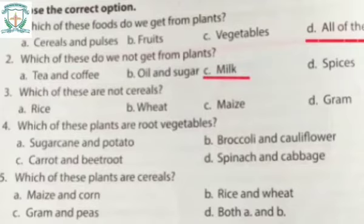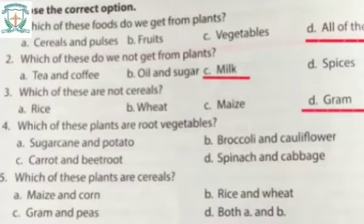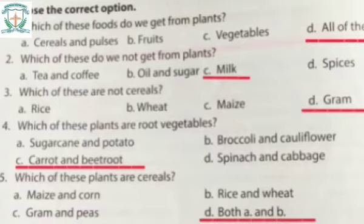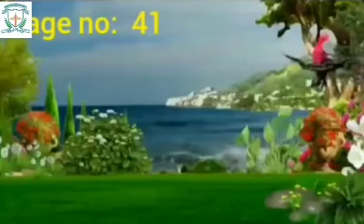Which of these are not cereals? Rice, wheat, maize, or gram? The correct answer is gram. Which of these plants are root vegetables? Sugarcane and potato, broccoli and cauliflower, carrot and beetroot, or spinach and cabbage? The correct option is carrot and beetroot. Which of these plants are cereals? Maize and corn, rice and wheat, gram and peas, or both A and B? The correct option is both A and B. Turn to page number 41.